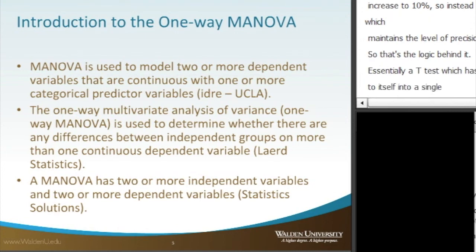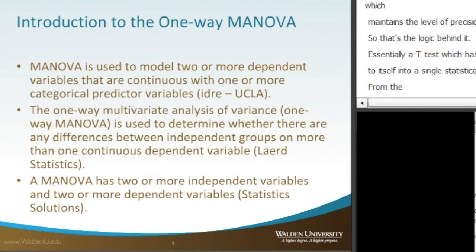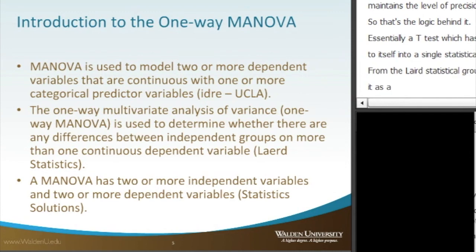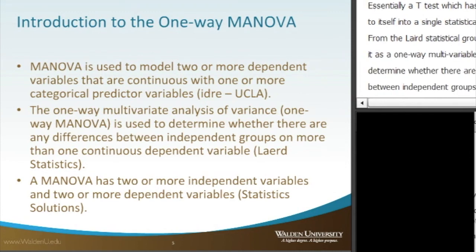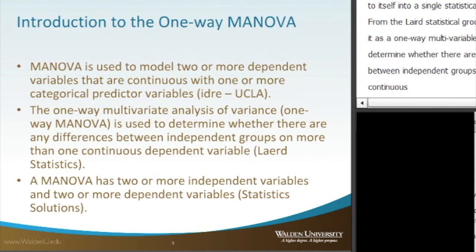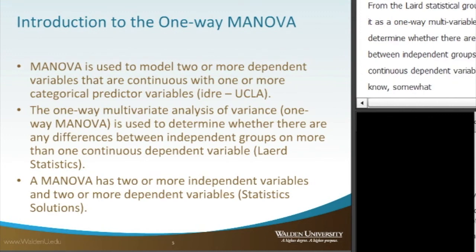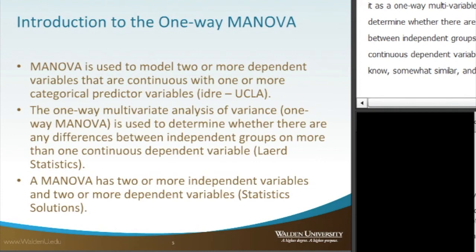From the Laird statistical group, the one-way multivariate analysis of variance is described as used to determine whether there are any differences between independent groups on more than one continuous dependent variable. And lastly, a MANOVA has two or more independent variables and two or more dependent variables.